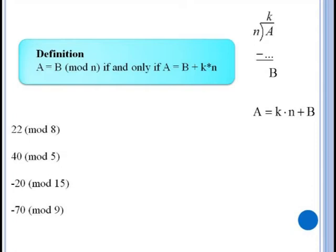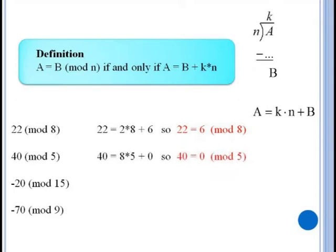We can still use our trick of dividing the modulus into the number and checking the remainder. So for twenty two mod eight we divide eight into twenty two. It goes twice with a remainder of six. So twenty two is equivalent to six mod eight. Similarly for forty mod five, five divides evenly into forty with the remainder of zero. Hence forty is equivalent to zero mod five.